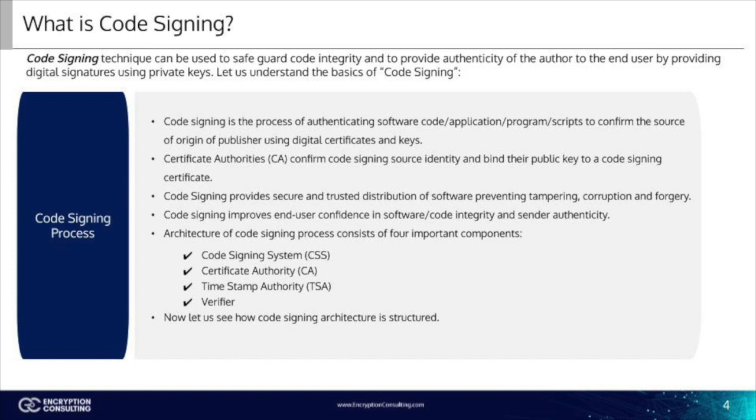The core architecture of code signing processes consists of four important components: CSS or code signing system, CAs or certificate authority, TSA or timestamp authority, and verifier. Now let's look at how the architecture of this is structured.